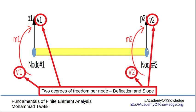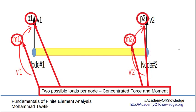On the other side also you have similar degrees of freedom, the deflection and the slope, so you end up with four degrees of freedom per element. Also at those two nodes each of them may have a concentrated force, a lateral force, and it may have a concentrated moment.